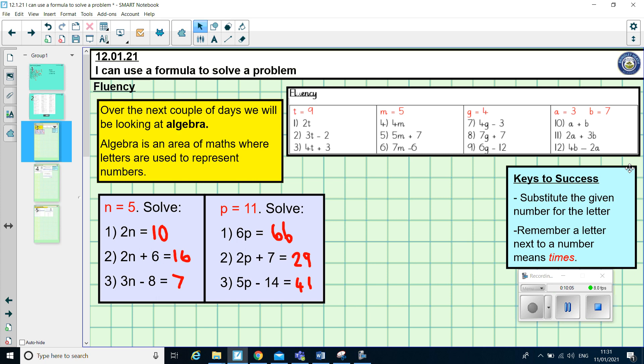For number 10, it's slightly trickier just because you had two letters to deal with here. But I think you could have done it. So, A is 3. B equals 7. So, A add B equals 10. Number 11. 2 lots of A was 6. Plus 3 lots of B was 21. So, 6 add 21. It gave 27. And number 12. 4 lots of B, which was 28. Take away 2 lots of A, which was 6. So, it gave the answer 22.